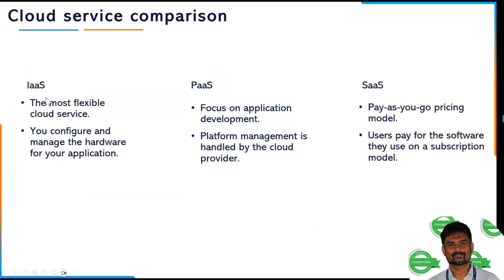IaaS is the most flexible cloud service — you configure hardware and your application. With Platform as a Service, you focus on your application and the cloud vendor handles hardware and platform management. With Software as a Service, you subscribe to the software, pay for it, and the cloud handles all the underlying infrastructure. That is the key difference between the three service types.